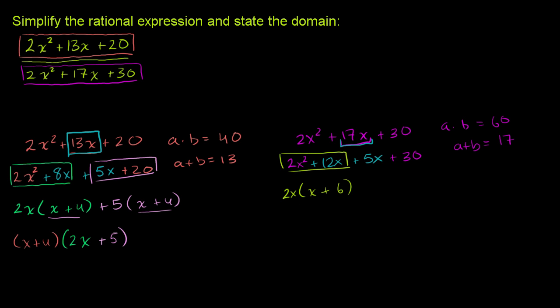And in that second group, we can factor out a 5. So you get plus 5 times x plus 6. And now we can factor out an x plus 6. And we get x plus 6 times 2x plus 5.